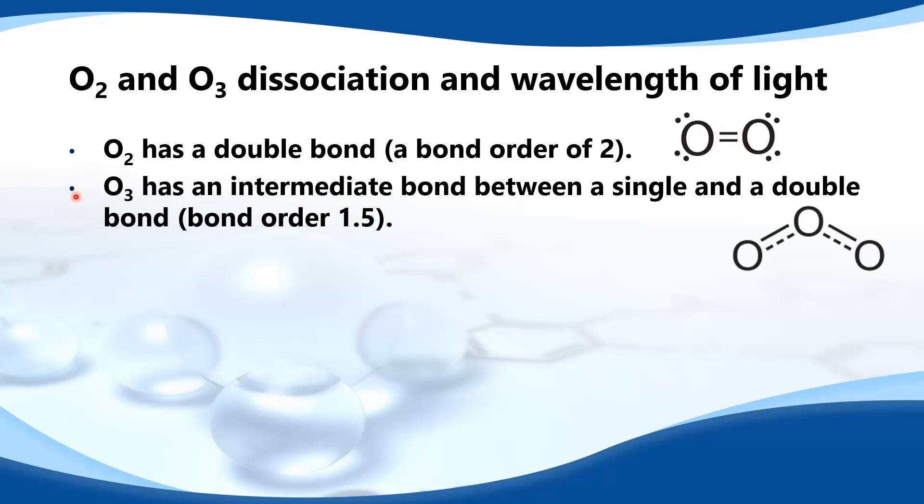Ozone has an intermediate bond between a single and a double bond, it has a bond order of 1.5, and here you can see the intermediate bond, that's intermediate in strength between a single and a double bond.